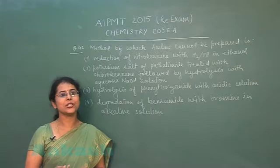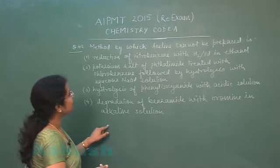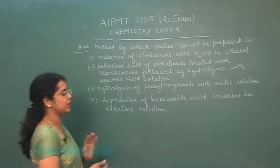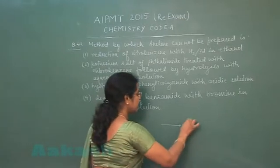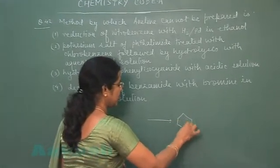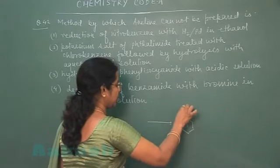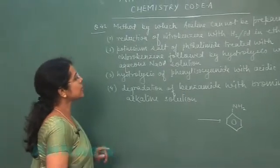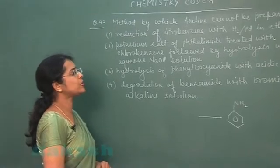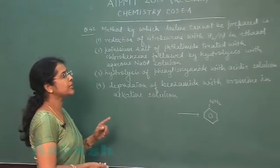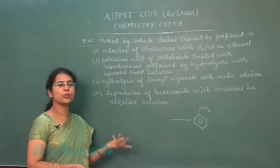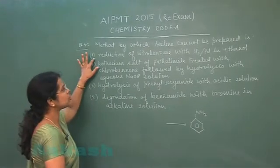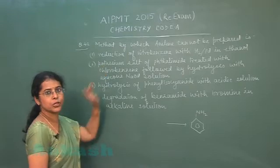Question number 42: Which method cannot be used to prepare aniline, a primary amine? The first option is reduction of nitrobenzene with hydrogen and palladium in ethanol. Nitrobenzene can be reduced to aniline, so this method can be used for the preparation of aniline.